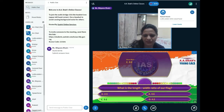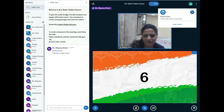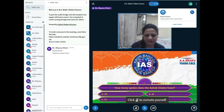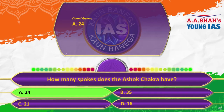The sixth question: How many spokes does the Ashoka Chakra have? In the center of our national flag, we have the Ashoka Chakra in blue. The options are A, 24; B, 35; C, 21; or D, 16. The correct answer is A, 24.